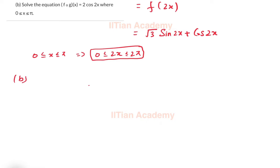Now let's move on to the second part where we have to solve the equation f(g(x)) = 2 cos 2x.